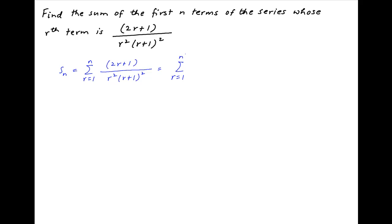Now add and subtract r² in the numerator. We have summation of r² + 2r + 1 minus r², divided by r² times (r + 1)².